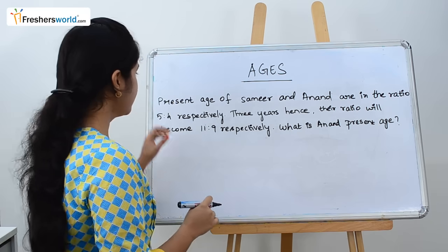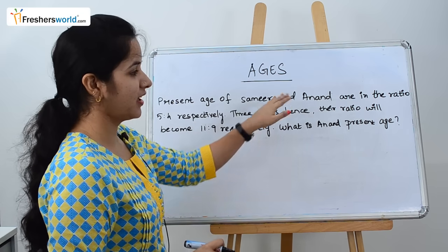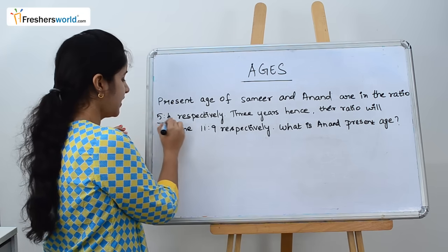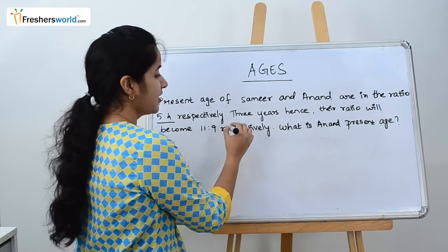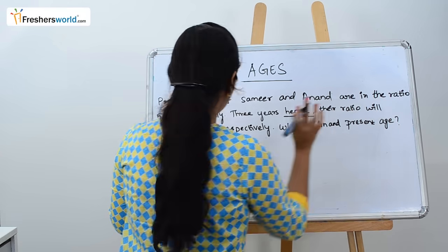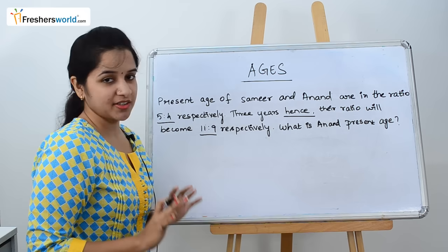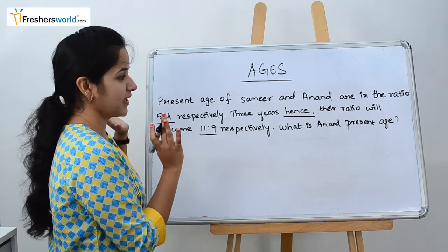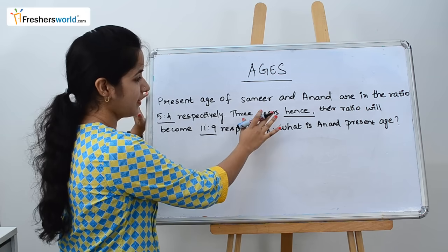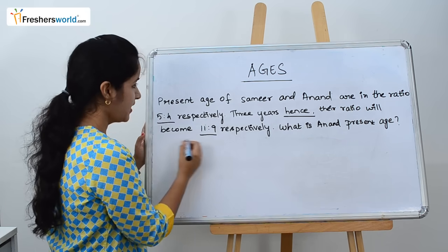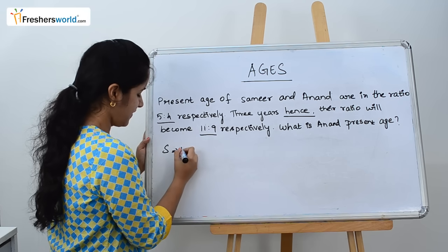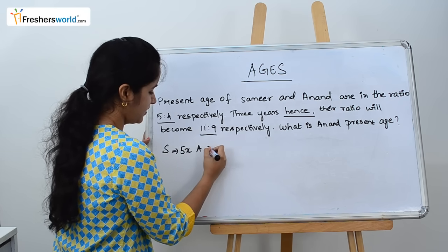The next question is: present age of Samir and Anand are in the ratio 5 is to 4 respectively. Let's write what's given in the first sentence. Present age given in ratio 5 and 4. For Samir it's 5X and for Anand it's 4X.